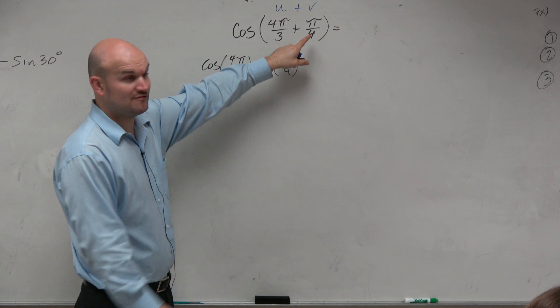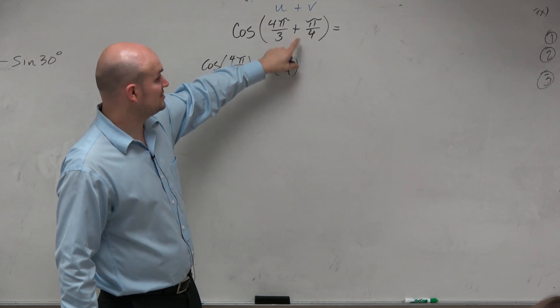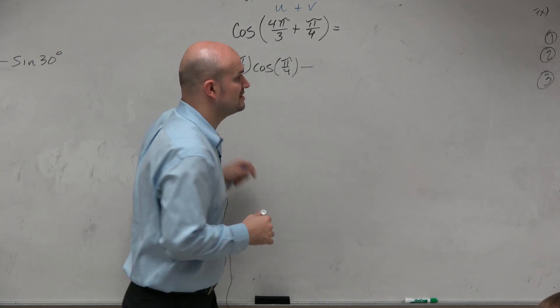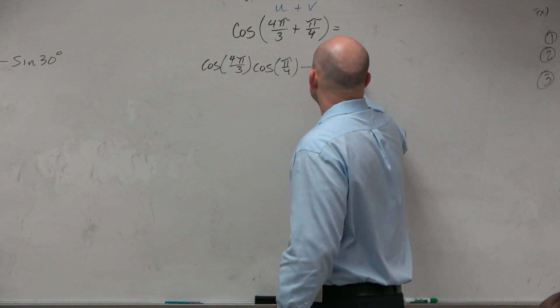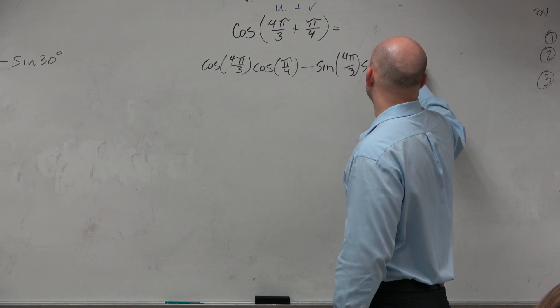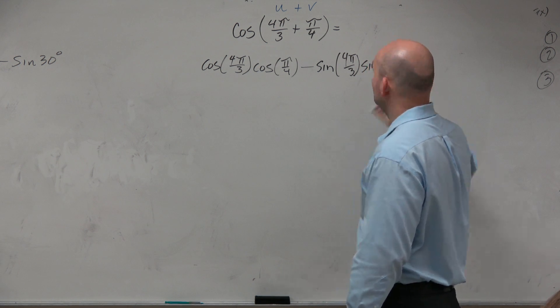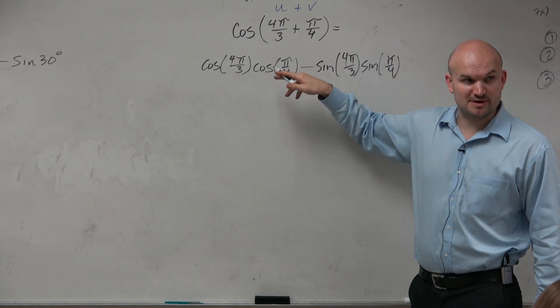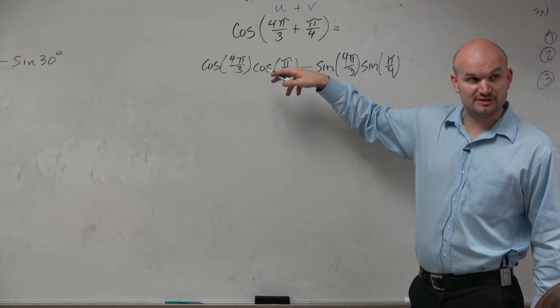And then now, remember, it's the cosine formula. So if it's plus angles, then you're going to subtract the values. And now we have the sine of 4π/3 times the sine of π/4. And these are equivalent expressions.